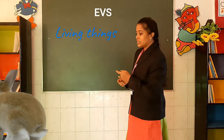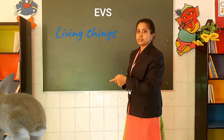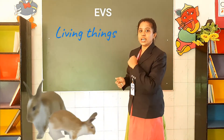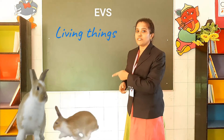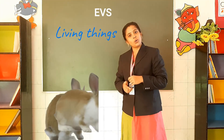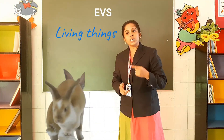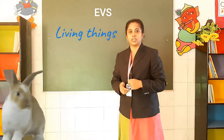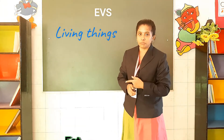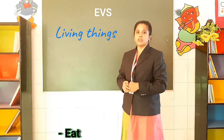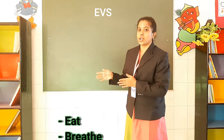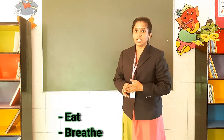And lastly, this rabbit is giving birth to young ones. Only living things can give birth to young ones. So these things can be done only by living things.